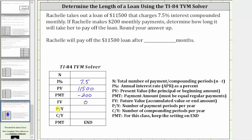The number of payment periods per year and the number of compounding periods per year are both 12, because the interest is compounded monthly and Rachel is making monthly payments. Now we go to the calculator, enter the information, and solve for N.